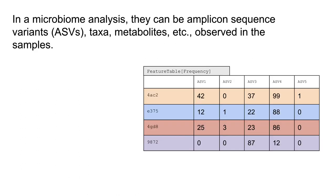In microbiome analyses, features could be amplicon sequence variants, taxa, metabolites, or functional genes — really a huge variety. You can also consider combining different feature types, which is what we did in that cervicovaginal cancer paper. The values simply describe how many times each feature is observed in each sample — for example, amplicon sequence variant 1 observed 42 times in sample 4AC2 — and that information can then be used as input to either an unsupervised or supervised learning algorithm.